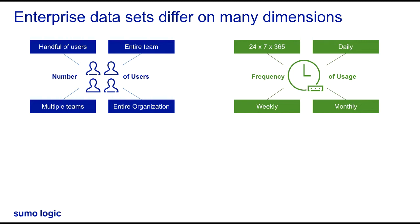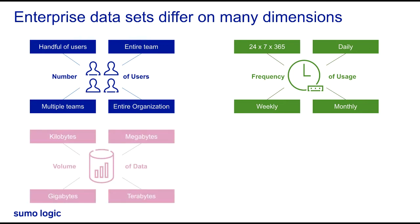A third variation of our data is by size. We may have some small, low-volume data sets, particularly in business intelligence, and there may be super-large, multi-terabyte data sets for production applications.